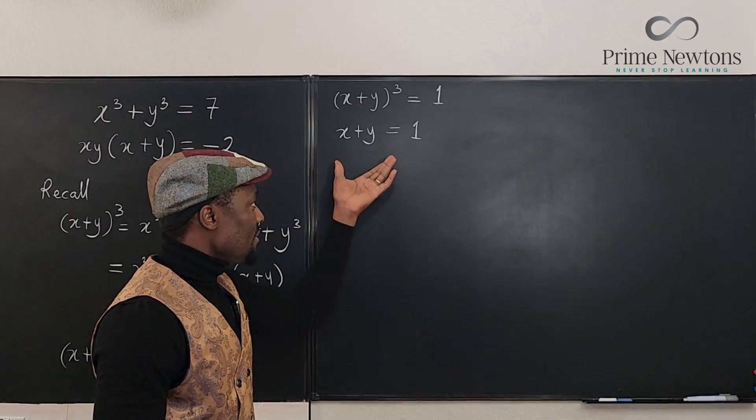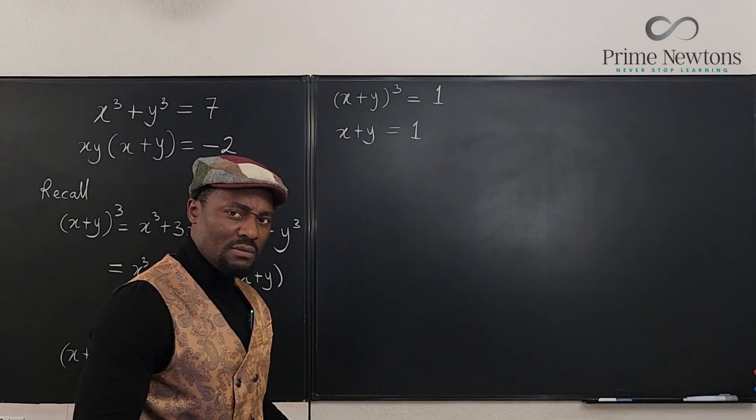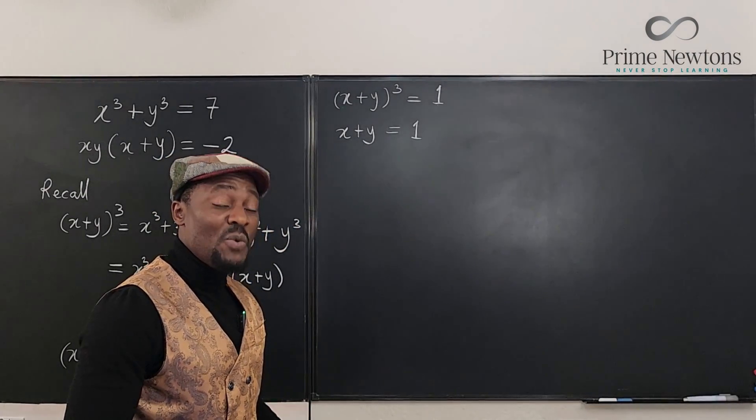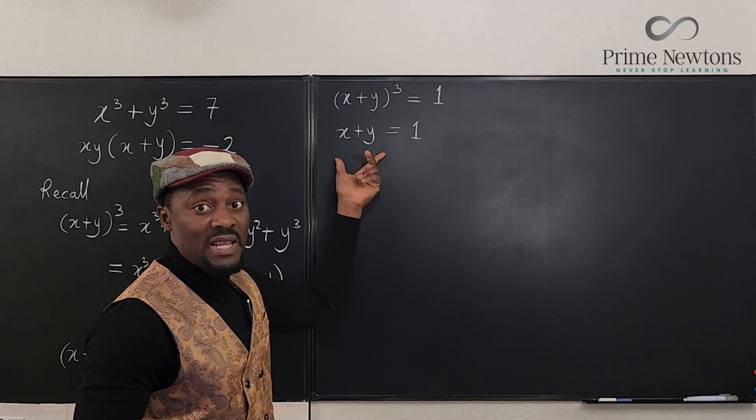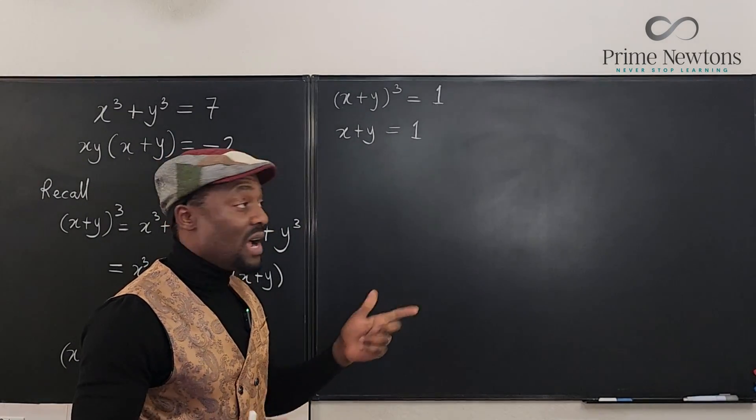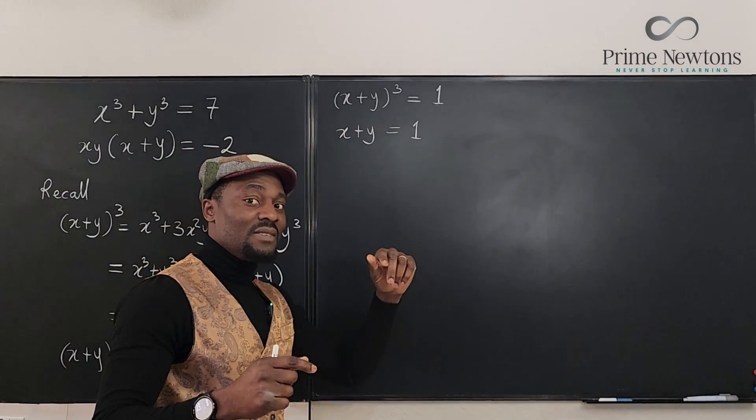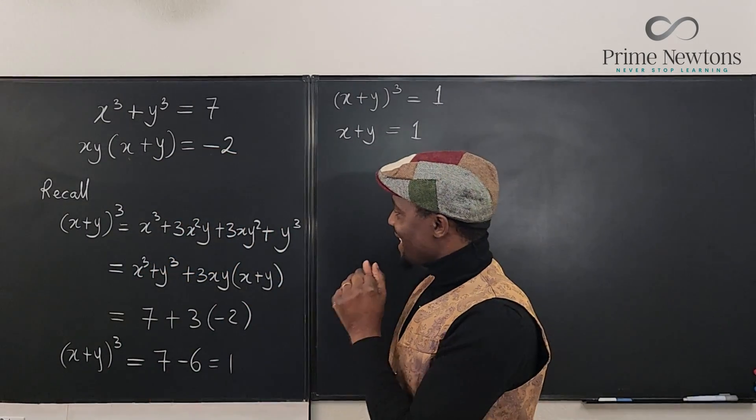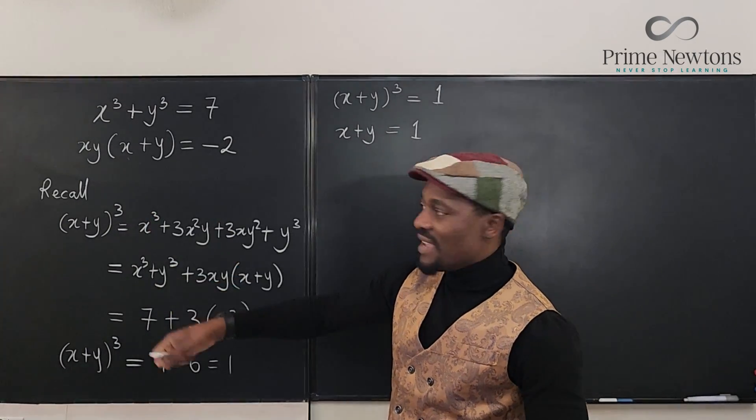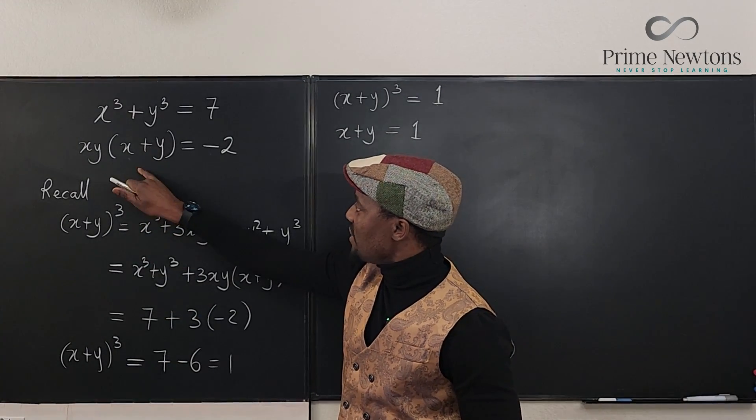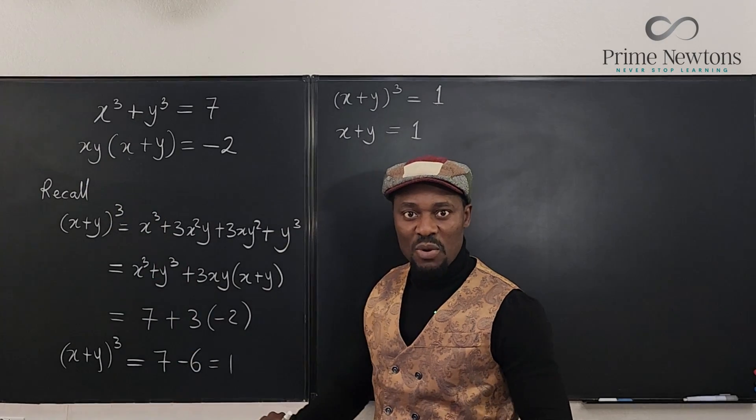Now, x plus y equals 1. Okay, we know that. But we need to find x itself because there are infinitely many combinations of x and y that would give us 1. But there's a secret here. Look at this. If x plus y is 1, we can find x times y, right?